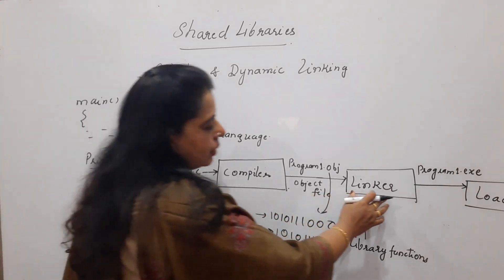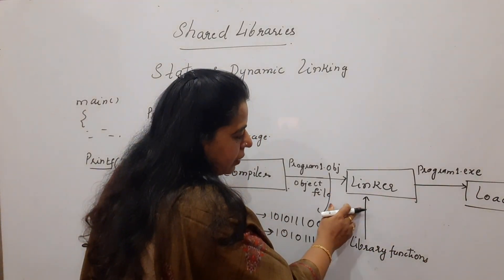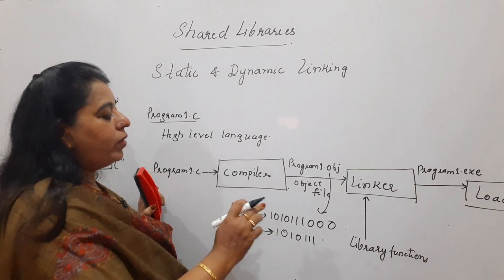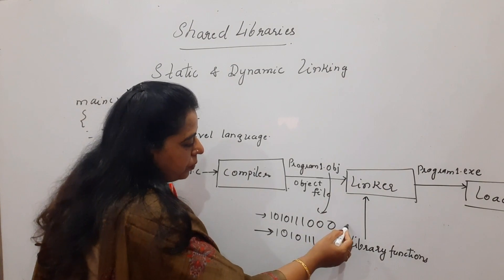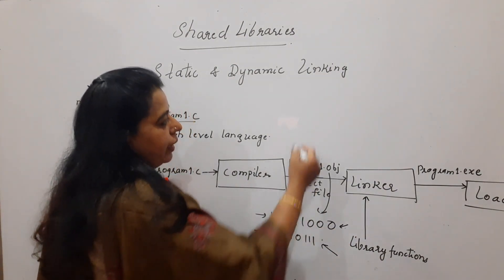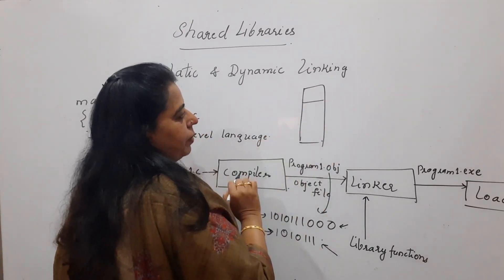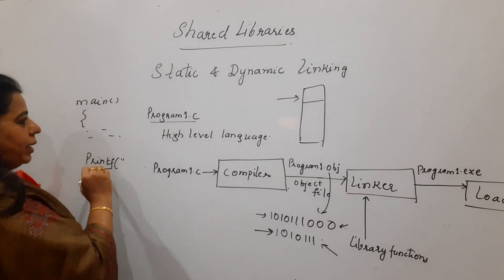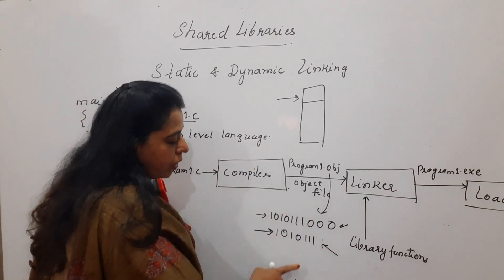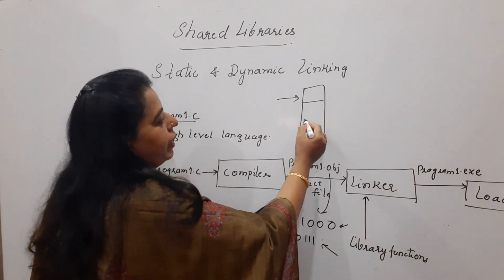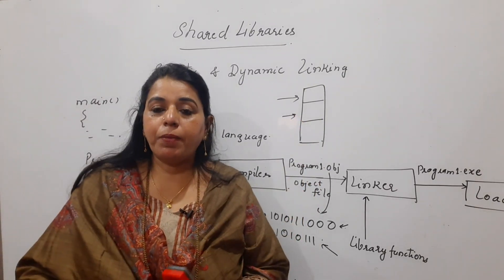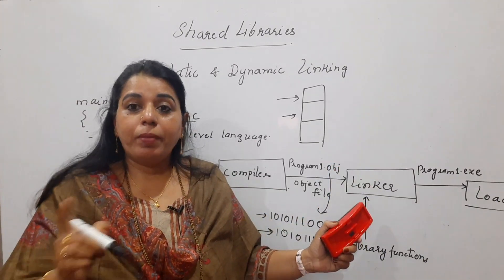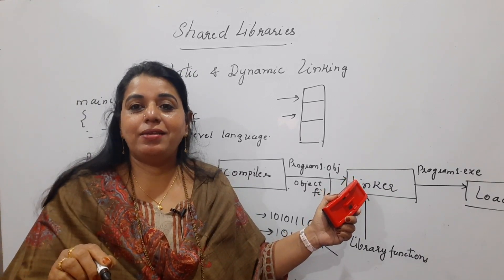In dynamic linking, the linker does not include library functions at compile time; instead, they are included at execution time. In static linking, the object code of the program and the object code of the library are combined and loaded into memory. If another user has a program also using printf, that library code gets combined again and loaded again. Even though printf is common to many programs, every time its code must be combined with each program's object code — leading to redundancy in the limited main memory.